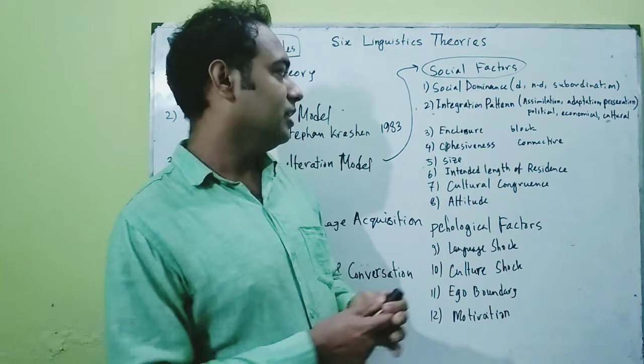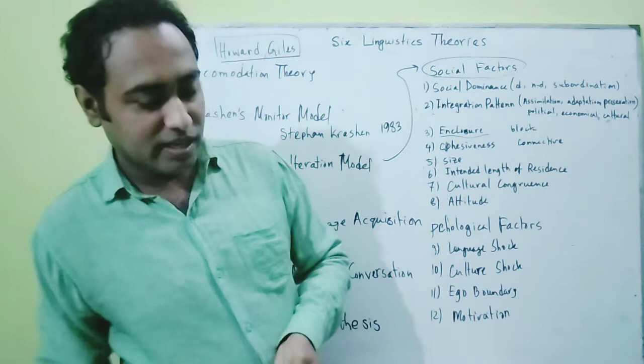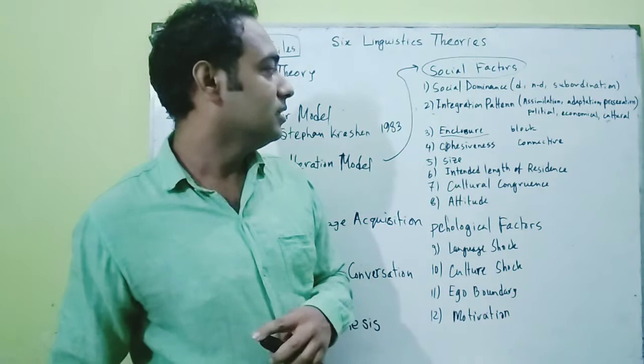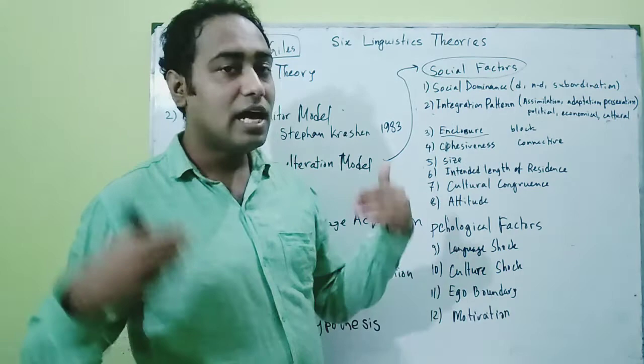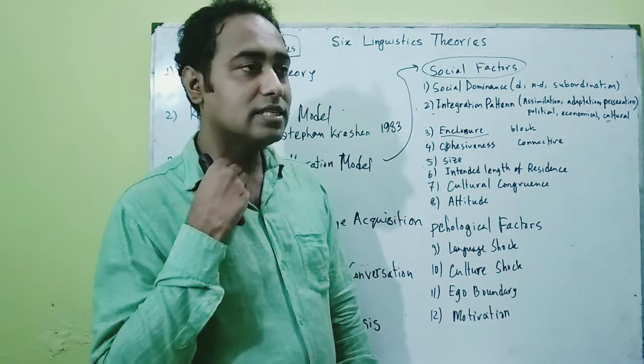The third factor is enclosure — it means how many blocks there are. If there is too much enclosure, the learner becomes unsuccessful. When there is less enclosure, the learner becomes successful.